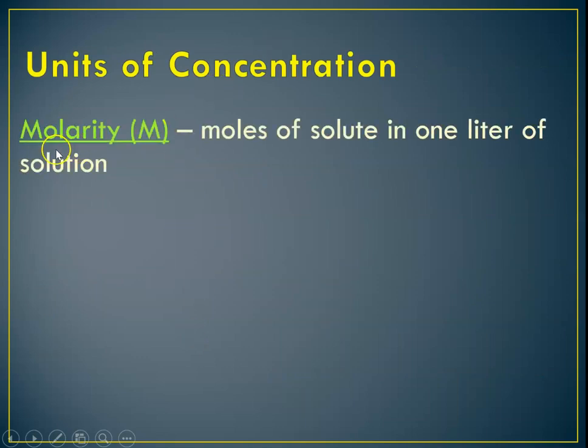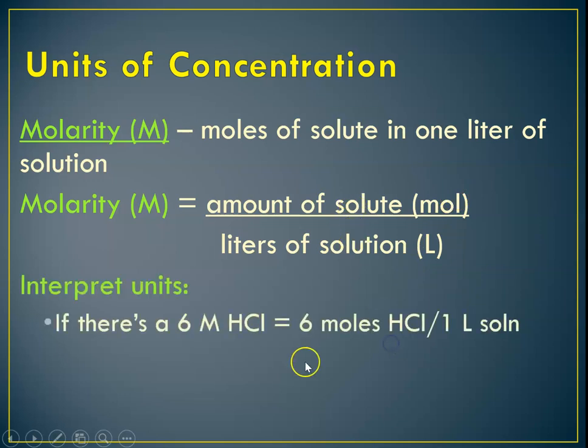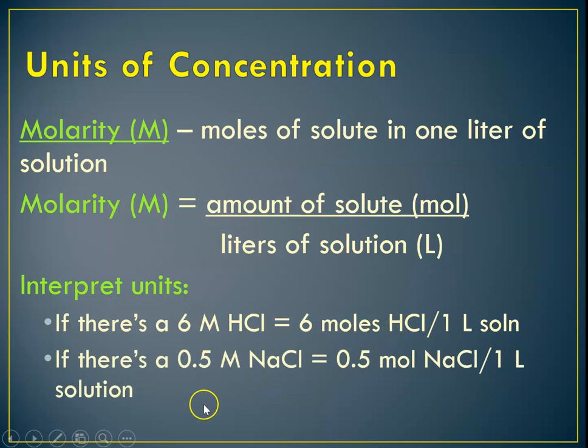So the one that we're going to be using is called molarity. And it's defined as the number of moles of a solute in one liter of solution. So molarity, which is capital M, is moles of solute per liter of solution. So amount over volume. And if we're interpreting the units, if I had a 6 molar hydrochloric acid solution, that means that there are 6 moles of HCl in every 1 liter of the solution. If I had a 0.5 molar sodium chloride solution, that means that there's a half a mole of sodium chloride in every 1 liter of the solution.